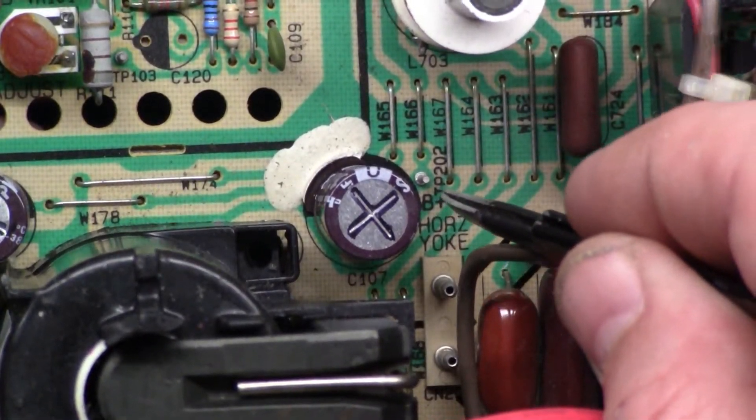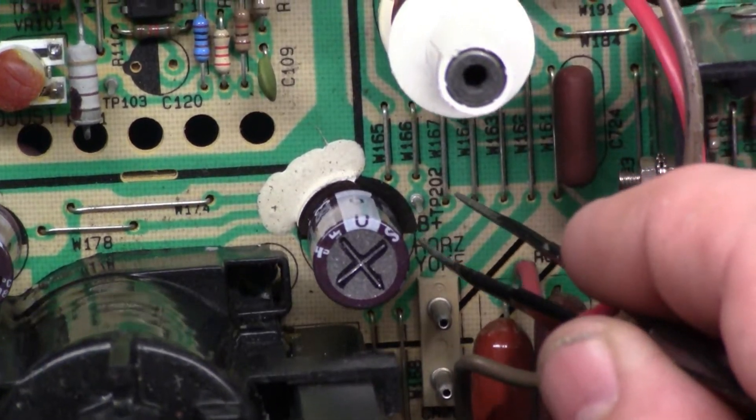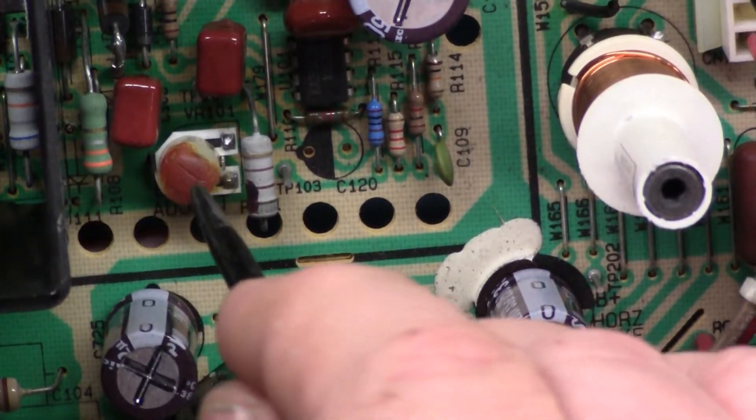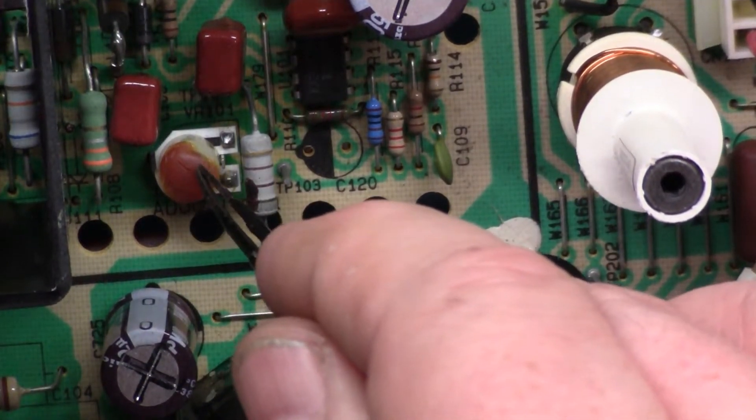But they're all three test point 202. So you put your positive lead here and your negative on your frame or your ground, and you adjust at this variable resistor, your B+ pot.